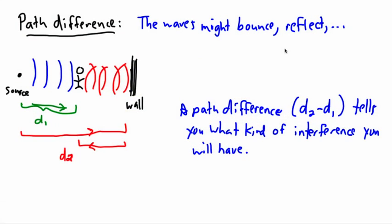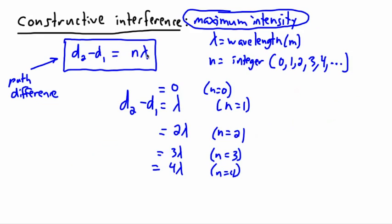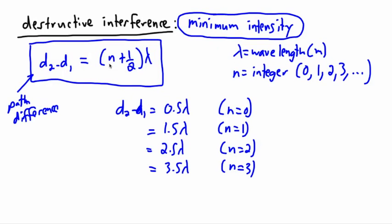We've just been looking at what happens when two waves interact, and it's all about the path difference. If the difference in path that each wave followed is equal to n times the wavelength, then you have constructive interference or a maximum. And if the path difference is equal to n plus a half times the wavelength, then you have a minimum or destructive interference.